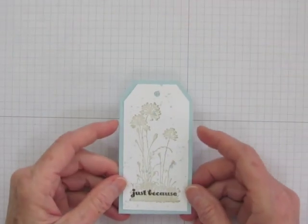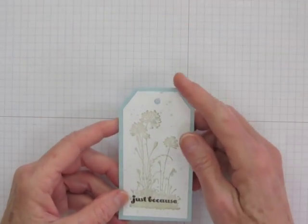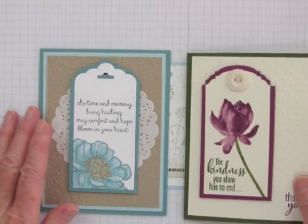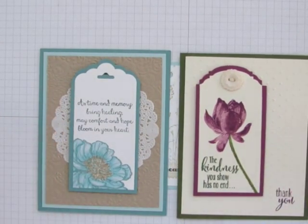In a recent video, I showed an easy way to create a mat for this angled top tag. Since a mat enhances whatever layer you put on top of it, I want to show you how to make them for the scalloped and ornate top tags as well.